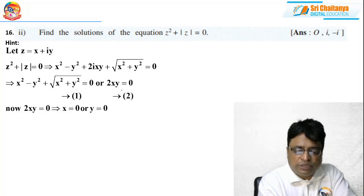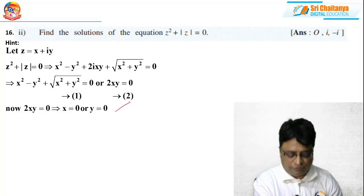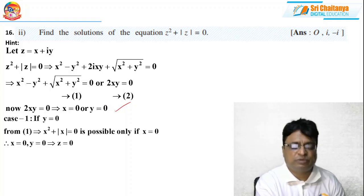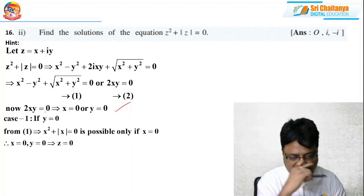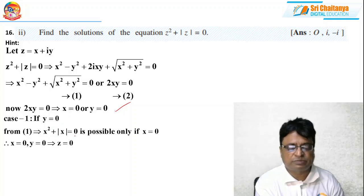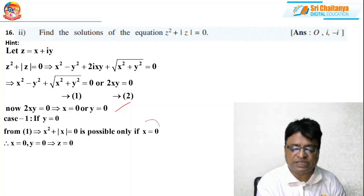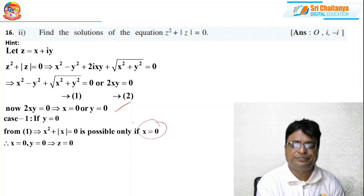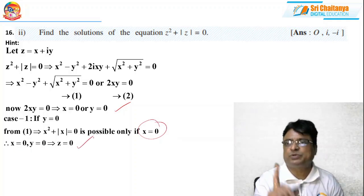From 2xy = 0 we get x = 0 or y = 0. Case 1: if y = 0, from equation 1 we get x² + |x| = 0, which is possible only if x = 0. So if x = 0 and y = 0, then z = 0 — that is one solution.